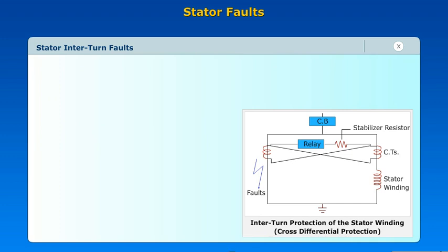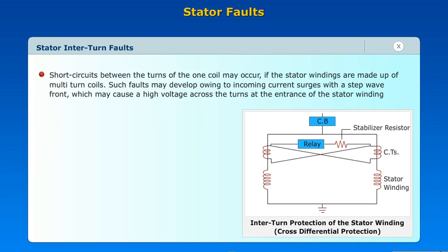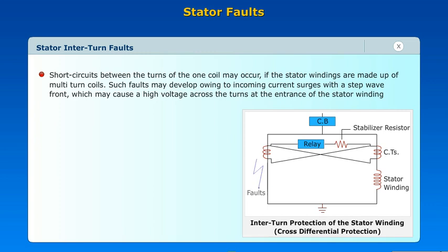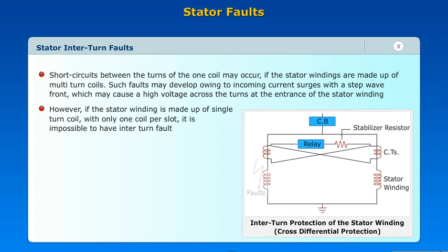Stator inter-turn faults: short circuits between the turns of one coil may occur if the stator windings are made up of multi-turned coils. Such faults may develop owing to incoming current surges with a step wave front, which may cause a high voltage across the turns at the entrance of the stator winding. However, if the stator winding is made up of single-turned coils with only one coil per slot, it is impossible to have an inter-turn fault.